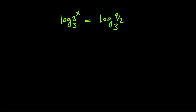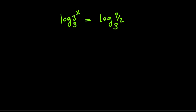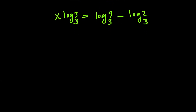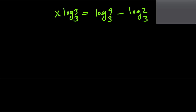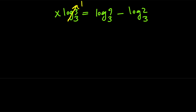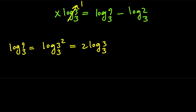Next, let's go ahead and use the properties of logarithm. For the left-hand side, I'm going to use the power rule, so we're going to have x times log 3 with base 3. And for the right-hand side, since we have the log of a quotient, let's use the quotient rule and turn this log into a difference of two logs: log of 9 with base 3 minus log of 2 with base 3. Now, log 3 with base 3 is 1, and log 9 with base 3 is the same as log 3 squared with base 3, which equals 2 times log 3 with base 3, which is 2. Therefore, we have x equals 2 minus log 2 with base 3.